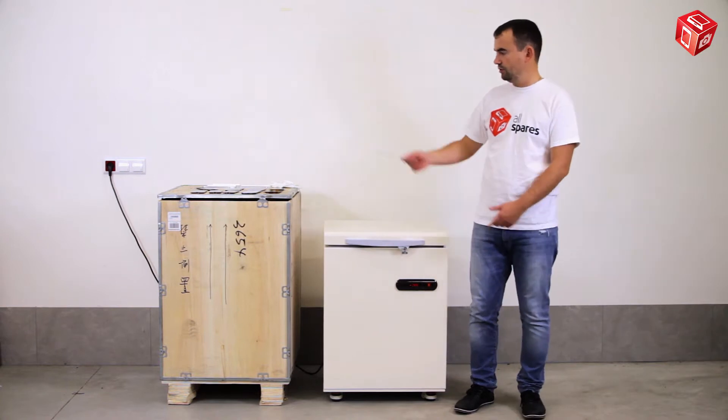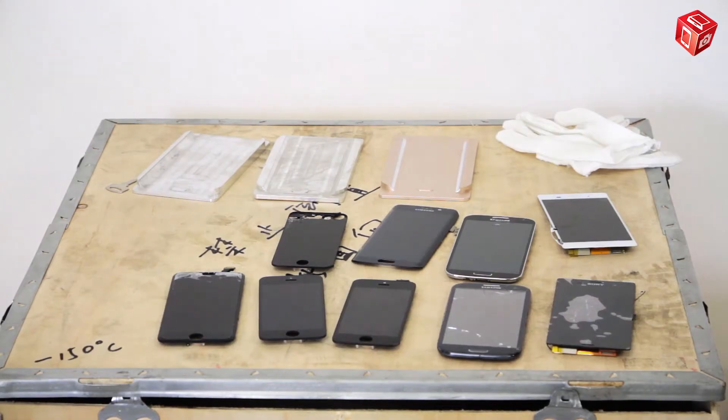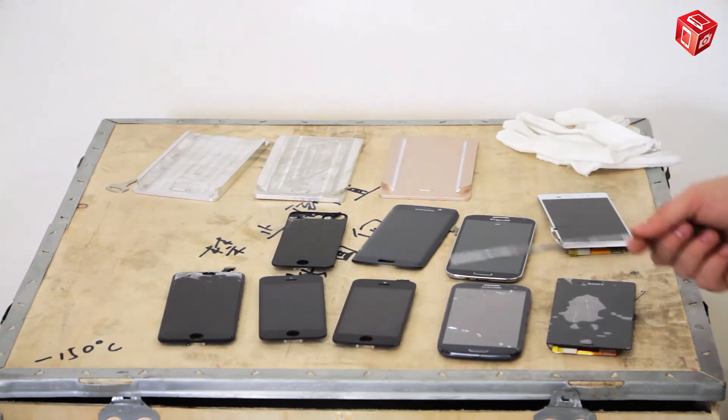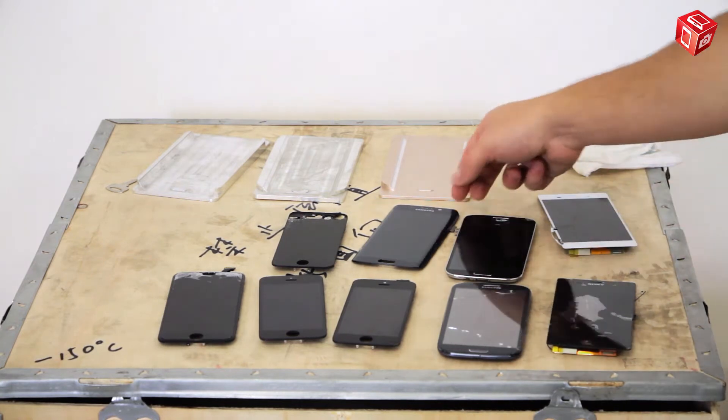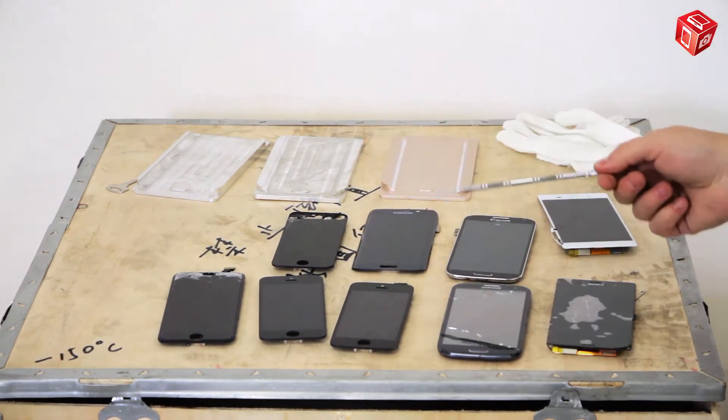We will now demonstrate how you can easily unglue a touchscreen from a display. We have chosen display modules from Sony, Samsung, Apple, and Samsung Edge smartphones to use as examples. Please take note that the screen of a Samsung Edge cannot be unglued without this special tray.